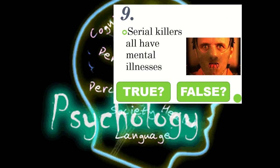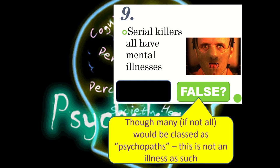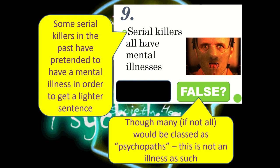Statement 9: serial killers all have mental illnesses — this is false. Though many, if not all, will be classed as psychopaths, that's not actually a diagnosable mental health issue. Some serial killers do try to use mental health issues as a defence in order to achieve a lighter sentence, but this creates a common misconception that serial killers must be mentally ill, and that's simply not the case.